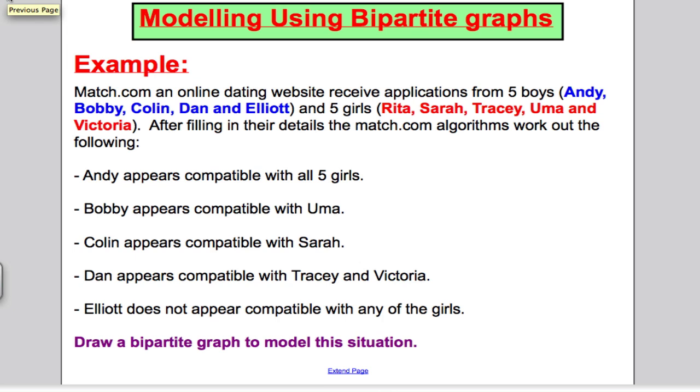Imagine the online dating website has five boys: Andy, Bobby, Colin, Dan, and Elliot, and five girls: Rita, Sarah, Tracy, Uma, and Victoria. After filling in their details on Match.com, their dating algorithms work out the following.